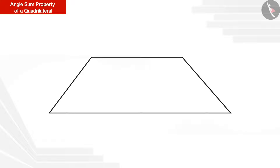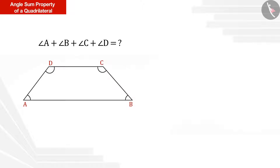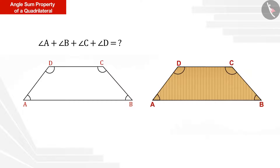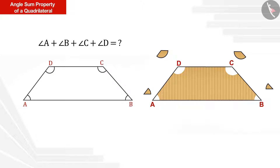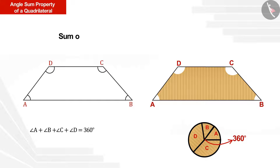Let us take the help of an activity. With a piece of cardboard, we make a similar quadrilateral and cut its angles. Putting the vertices of all these angles at one point, we can see that they form a circle. We know that the angle at the center of a circle is 360 degrees. Therefore, the sum of interior angles of a quadrilateral is 360 degrees.